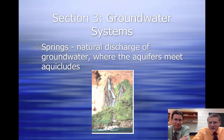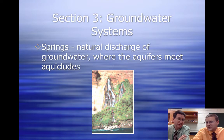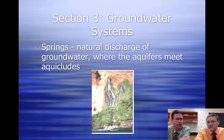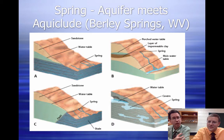Here we are with our third section: groundwater systems. In particular, what we want to talk about is where we can get water out of the ground and how we can access it. There are different ways to find water in the ground. One of the ways is through a spring — basically a collection of water in an aquifer that moves along the strata under the ground.